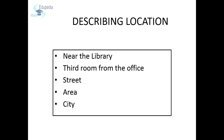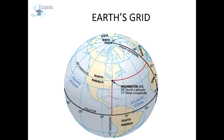Similarly, to describe the location of your house or school, you could give reference points in the form of street name, area name, city name, etc. Such reference points would be easy to understand and use for any local person. But for any person living very far in another country or continent, it would be useless. To solve this problem, cartographers have developed a coordinate system to describe the location of any place or feature on Earth.